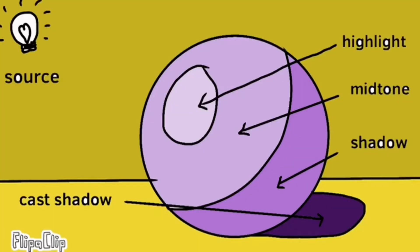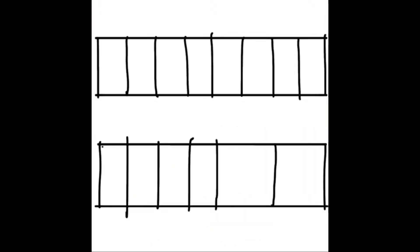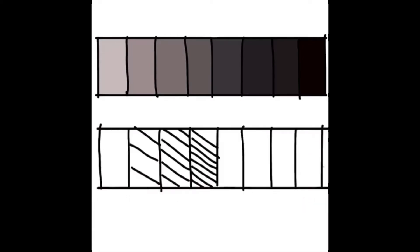So as you notice, the value of color gradually becomes darker as it goes away from the source of light. This is the value scale. The change of color from light to dark is called gradation.